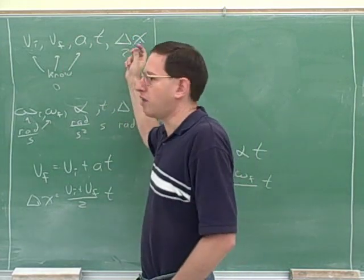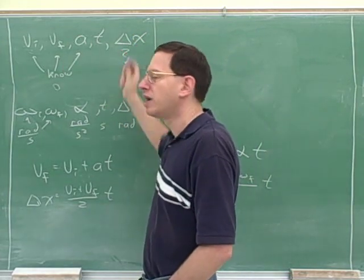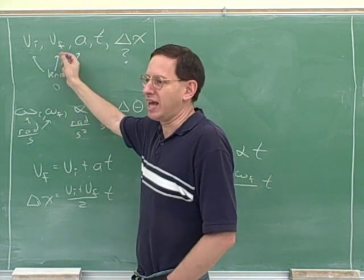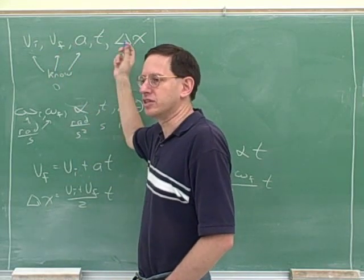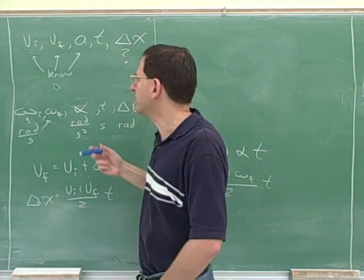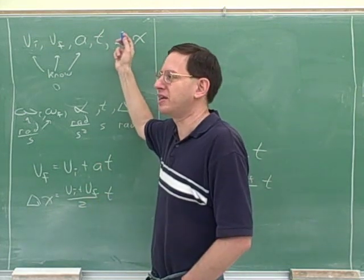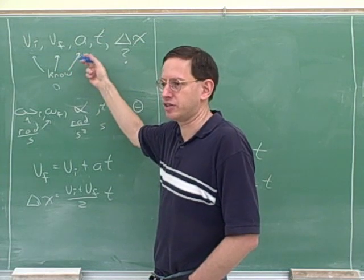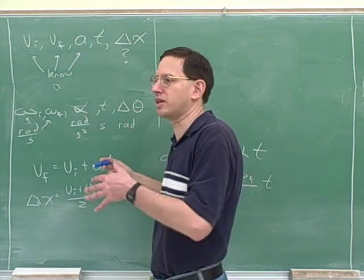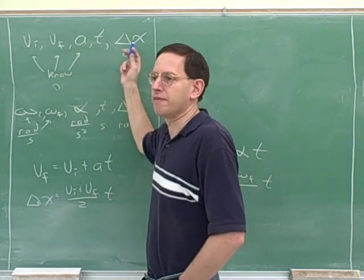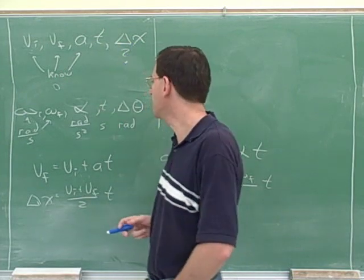You actually write down all five variables, you indicate which variable you don't know, and then you need three numbers. And then you're ready to pick out the equation that deals with those four variables. A lot of students tend to be lazy, and they don't like actually writing these variables. But then they don't really know when they're ready to go to the equations yet. So I really encourage you when you see you're doing kinematics, to write out all five variables as a framework for attacking the problem.